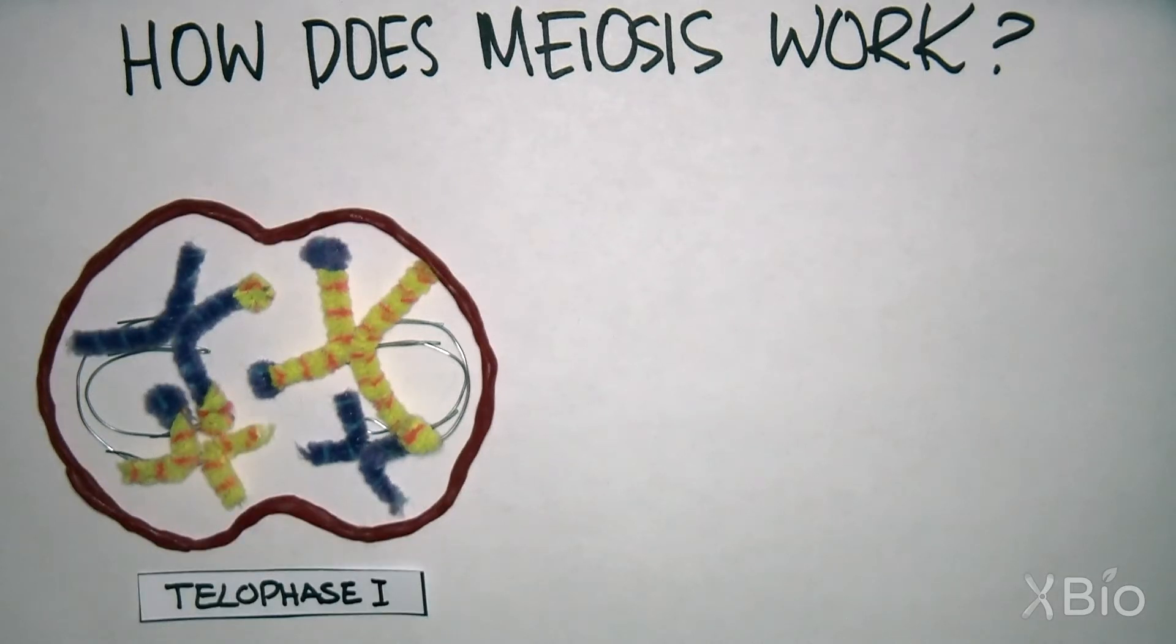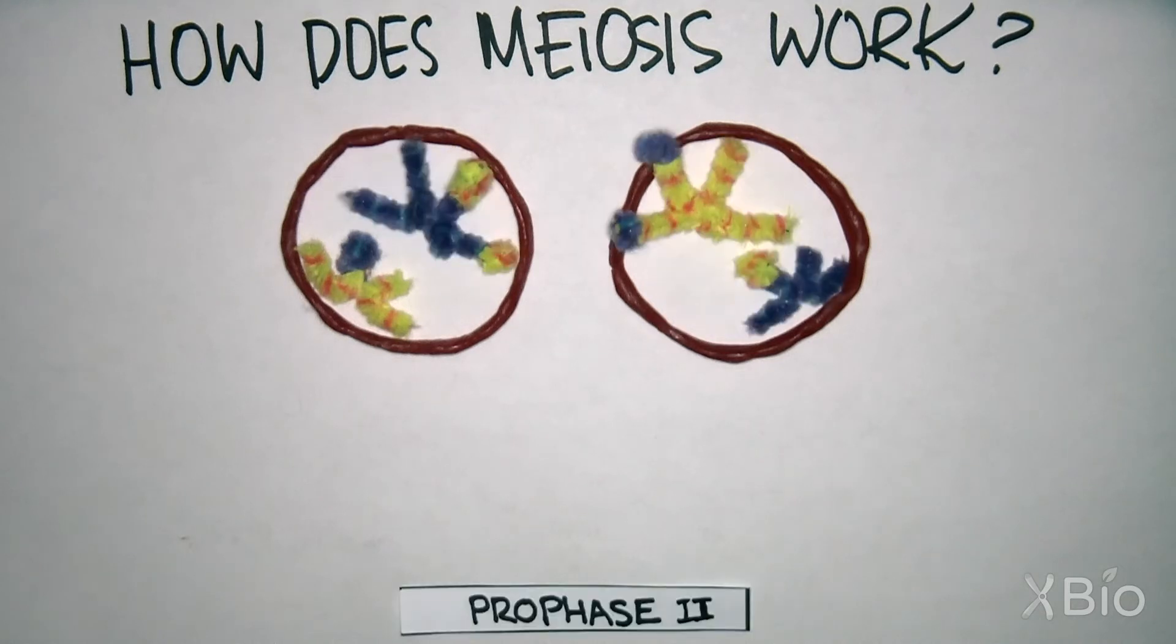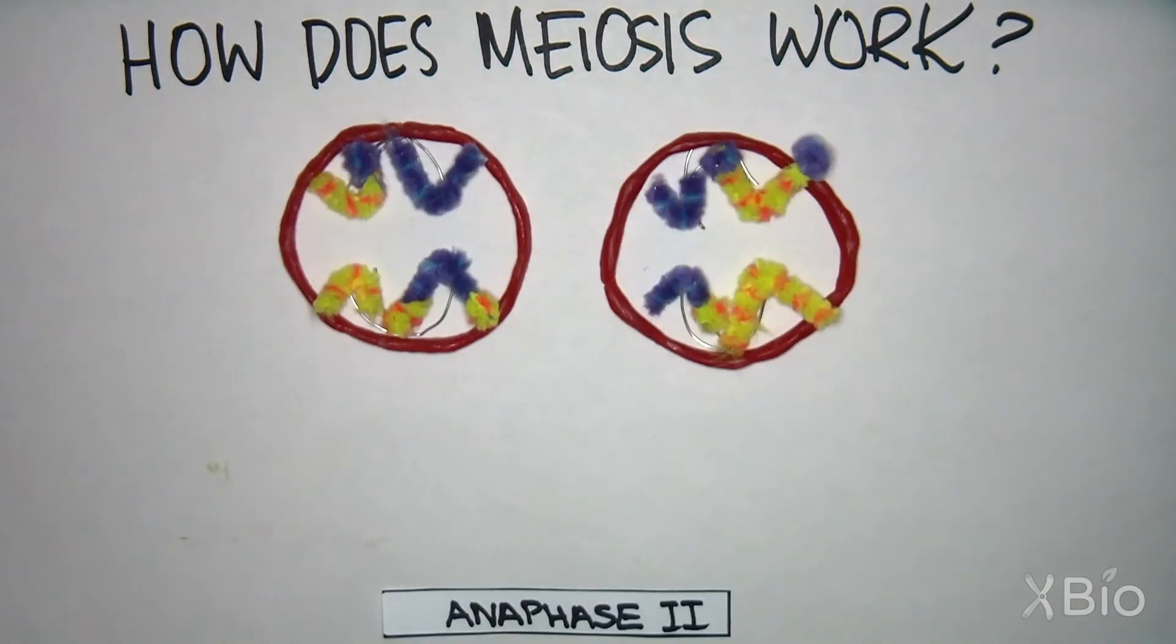Immediately following this first division, there is a second division without any DNA replication. This division reduces the number of each chromosome from two, diploid, to one, haploid.